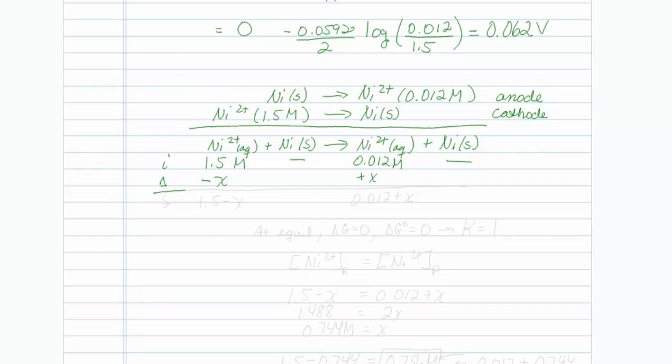Initially the reaction is going to go to the right, so minus x here, plus x here, and at equilibrium we have 1.5 minus x and 0.012 plus x. The piece you probably don't realize is at equilibrium for a concentration cell, the free energy is equal to 0, but also the standard state free energy is equal to 0 for this concentration cell. So that means that K is equal to 1. So at equilibrium, nickel 2 plus on the reactant side has to equal nickel 2 plus on the product side. So I can just take 1.5 minus x and set it equal to 0.012 plus x.